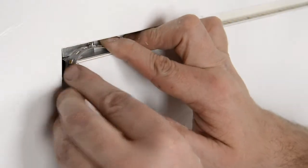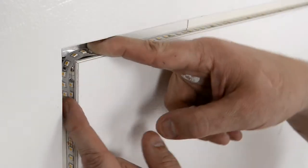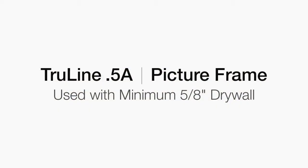This short video will demonstrate the five easy steps to install the PureLighting TrueLine Point 5A system with a picture frame corner.